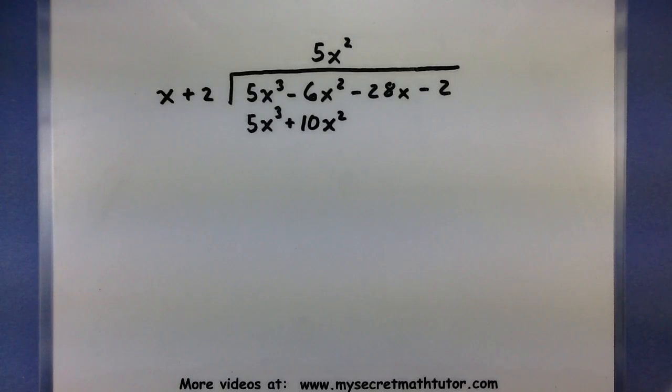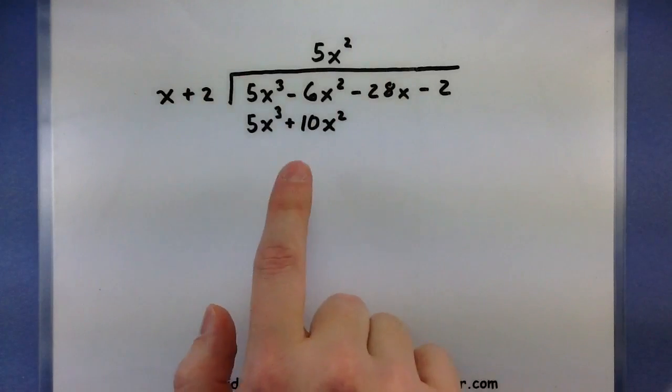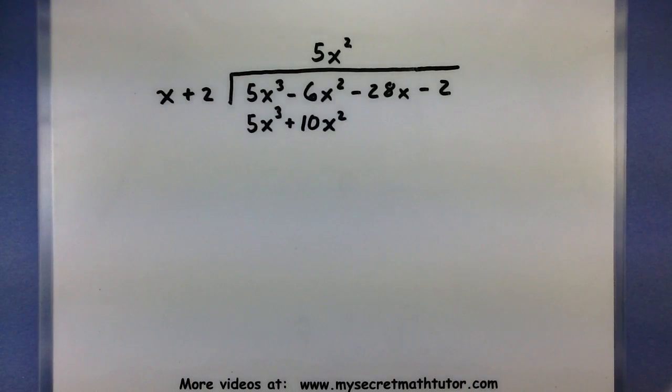So just like a normal long division problem, you figure out how many times it goes in there, you write it on top, then you multiply through, write it underneath, and of course now the most important step, you want to subtract that away.